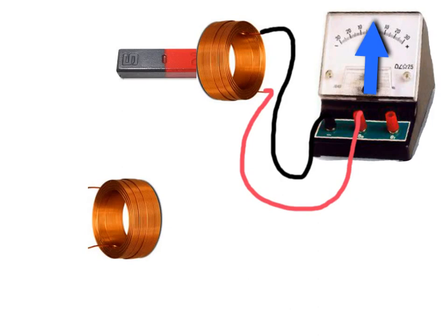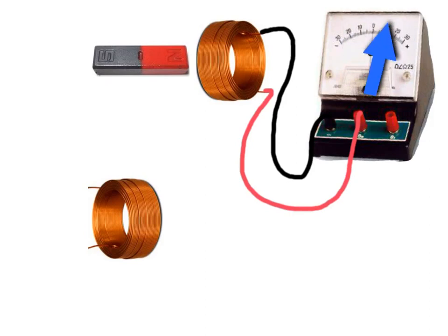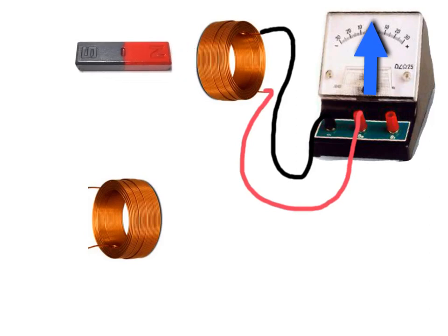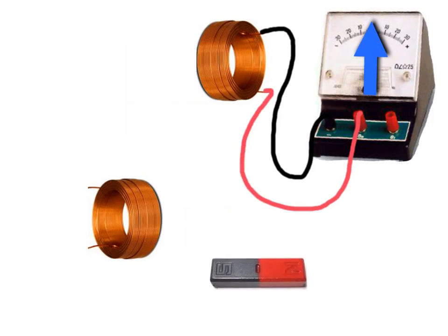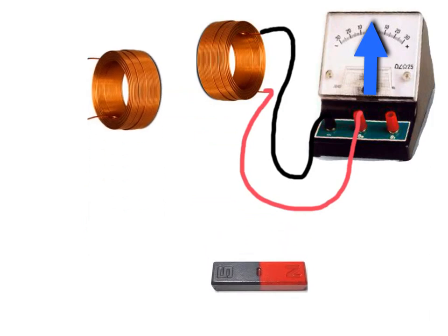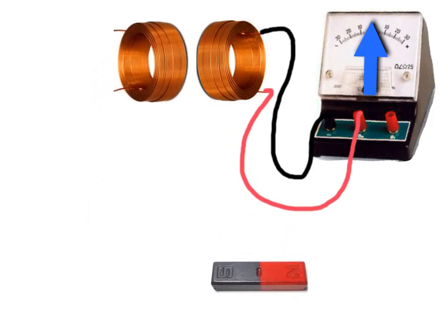Now the transformer works on a very similar principle to the previous experiment. Remember what we had was a magnet that was moving in and out of a coil and that was causing the motion of the galvanometer. So rather than a permanent magnet, what if we replace that magnetic field with one that was being produced from electricity.